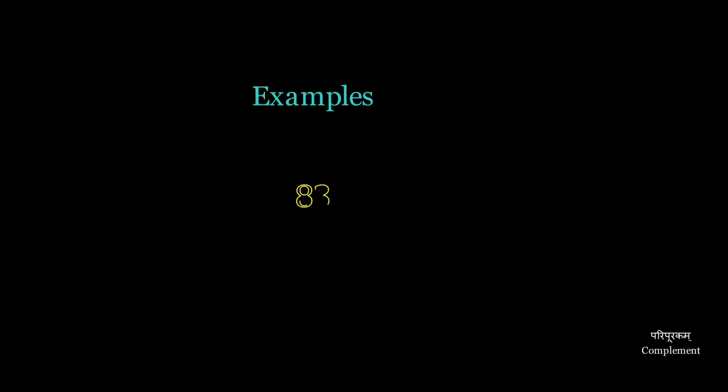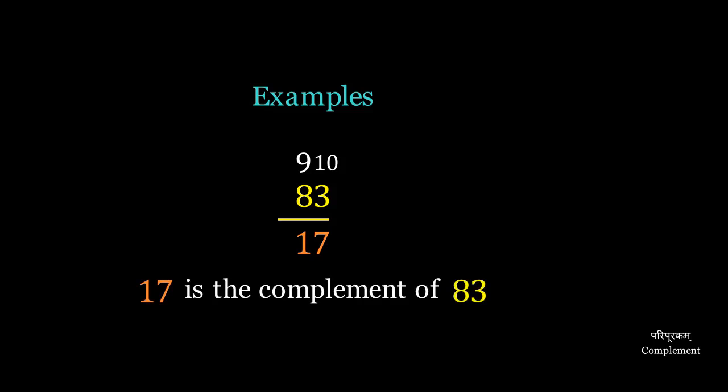Similarly, for 83: 9 minus 8 is 1, and 10 minus 3 is 7, which gives us 17 as the complement. 83 and 17 are complements of each other.